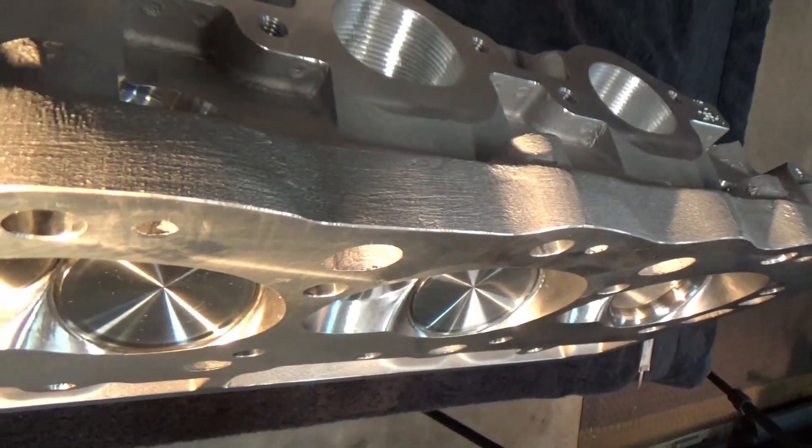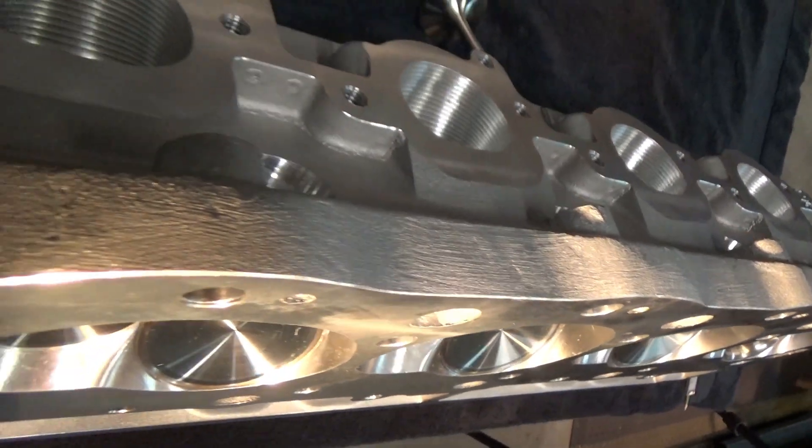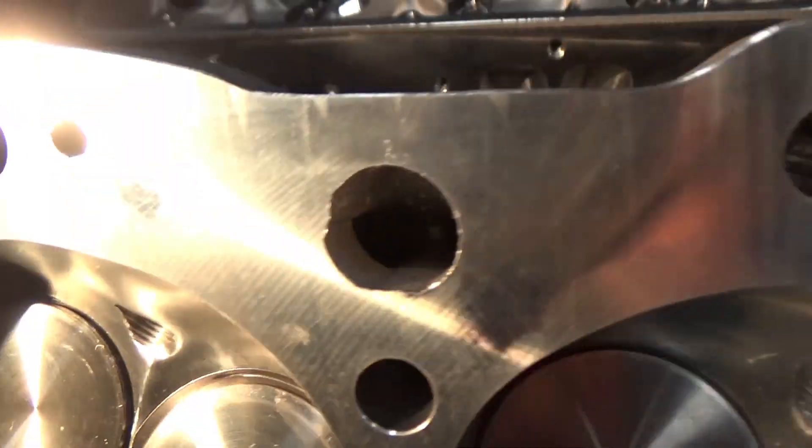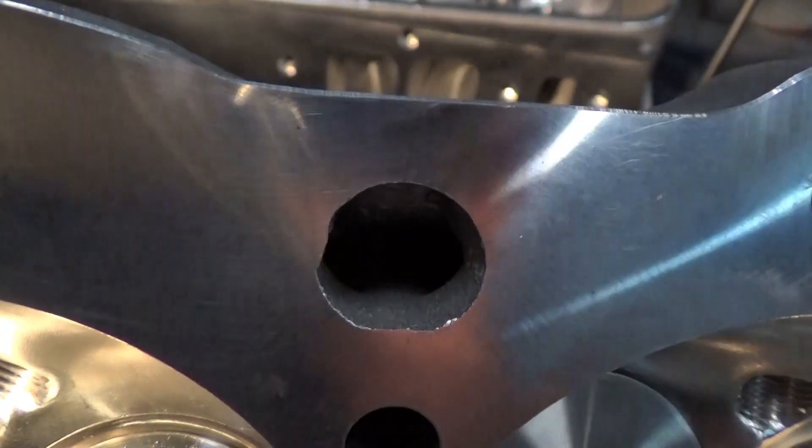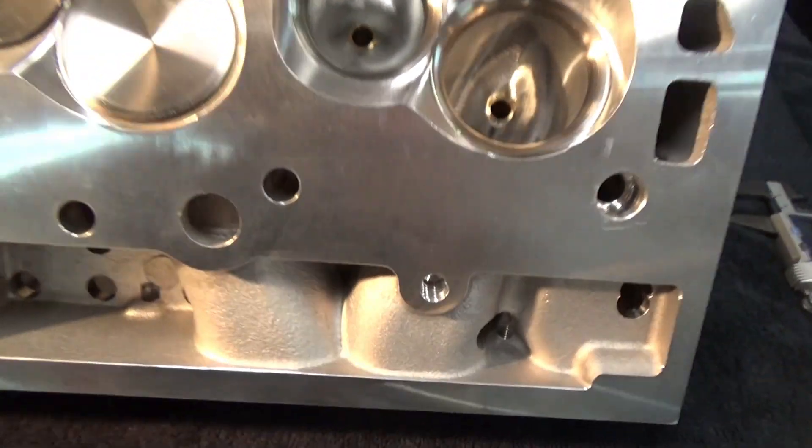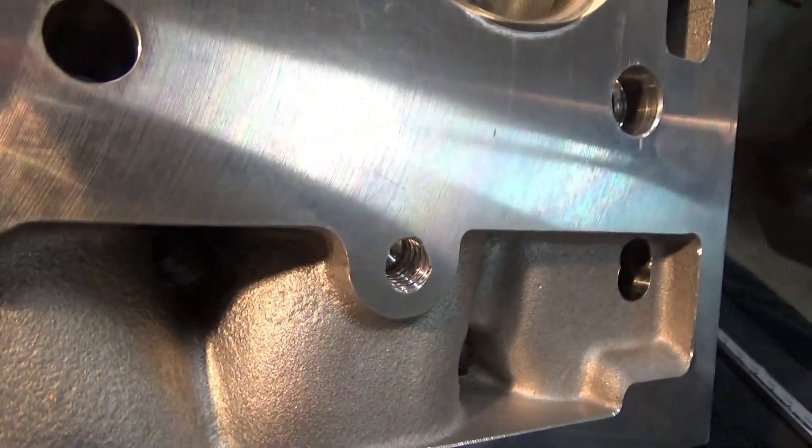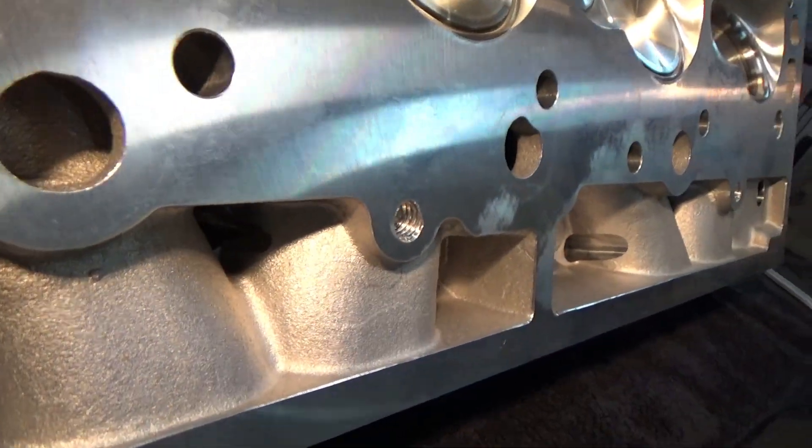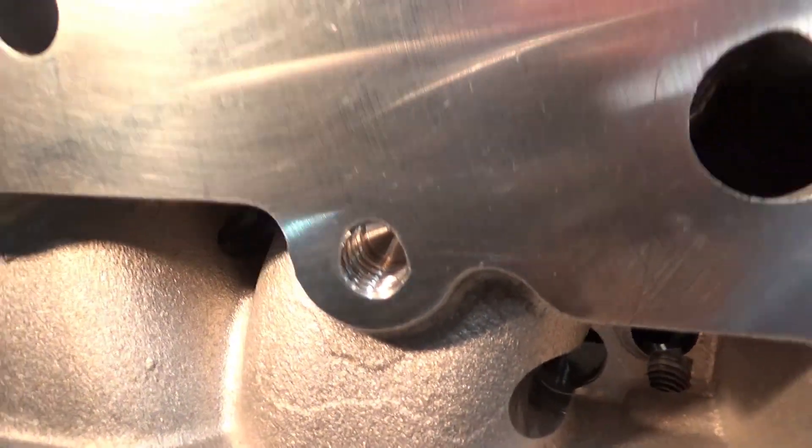It just looks nice and thick, well made, very satisfied with it. When you look inside where the water jackets are and the combustion chambers, very thick, a lot of material. Then also they have, if you did want to run six studs on the cylinders for more clamping, you could actually put studs there. Now my block doesn't have the bosses for that so I can't utilize that.